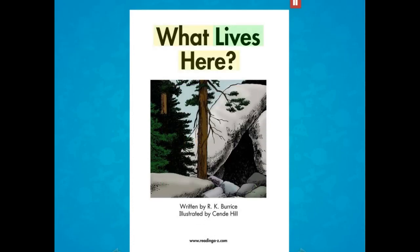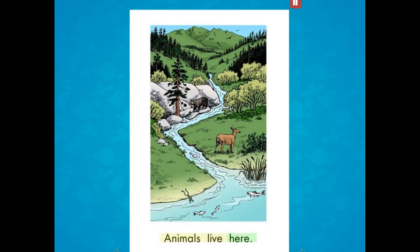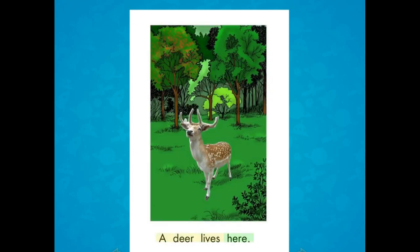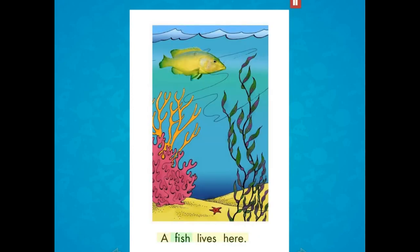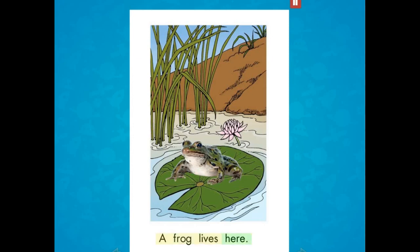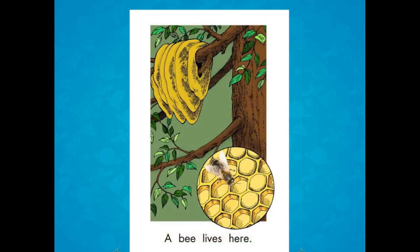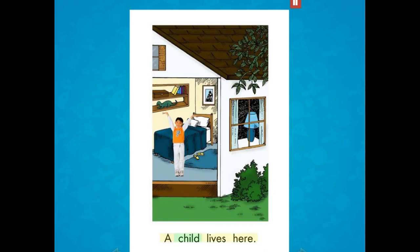What Lives Here? Written by R.K. Burrus, illustrated by Cindy Hill. Animals live here. A bear lives here. A deer lives here. A fish lives here. A frog lives here. A worm lives here. A bee lives here. A child lives here.